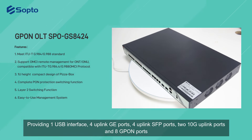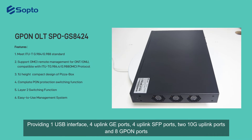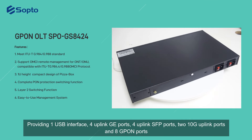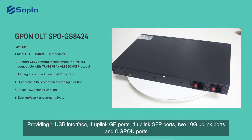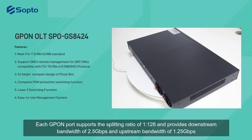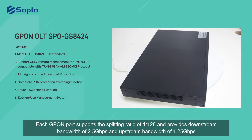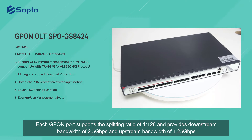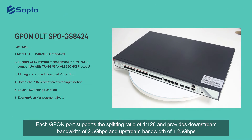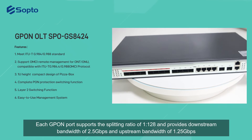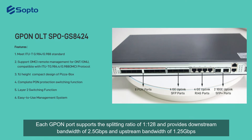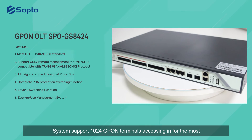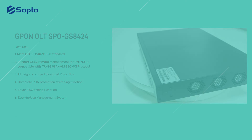G-PON model specifications: providing one USB interface, four uplink G ports, four uplink SFP ports, two 10-gigabit uplink ports, and eight G-PON ports. Each G-PON port supports a splitting ratio of 1:128 and provides downstream bandwidth of 2.5 Gbps and upstream bandwidth of 1.25 Gbps. System supports up to 1024 G-PON terminals accessing.